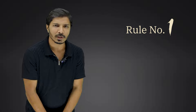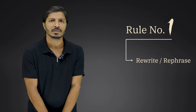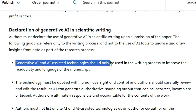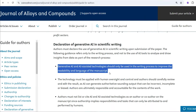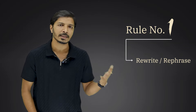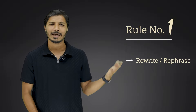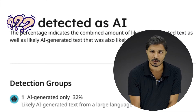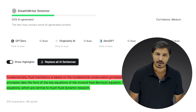Rule number 1: You can use generative AI tools like ChatGPT or Killboard to rewrite or rephrase text, and this is clearly mentioned by journals. Generative AI and AI-assisted technology should only be used in the writing process to improve the readability and language of the manuscript. So if your English is poor, you can write your manuscript in your own words and then rewrite it using ChatGPT to make it technically strong. However, even if you are rewriting your own manuscript, it may still be detected as AI-generated text.